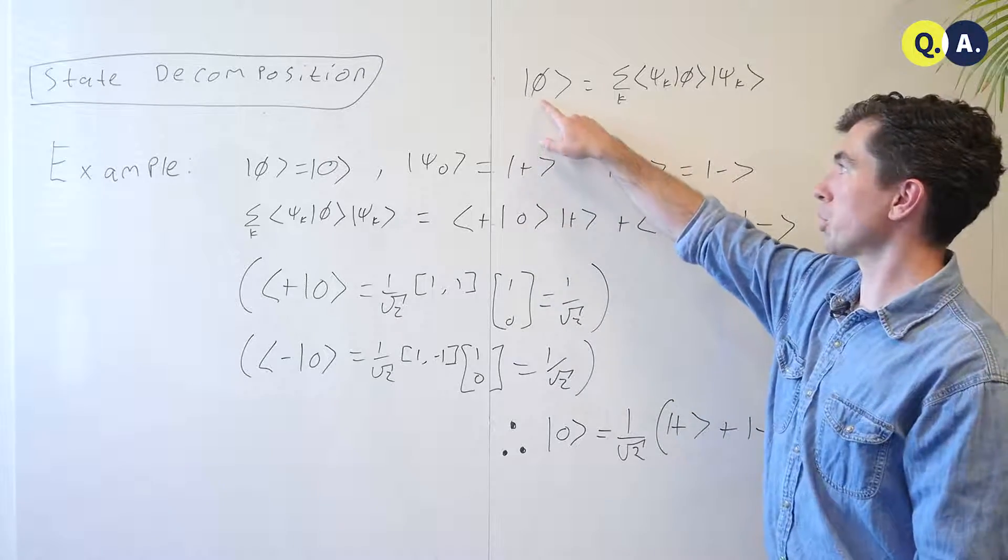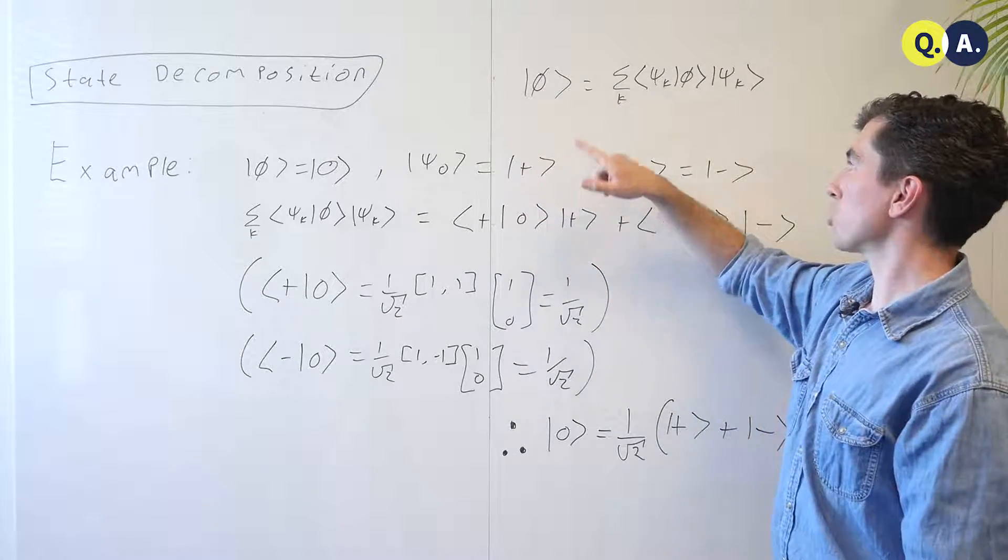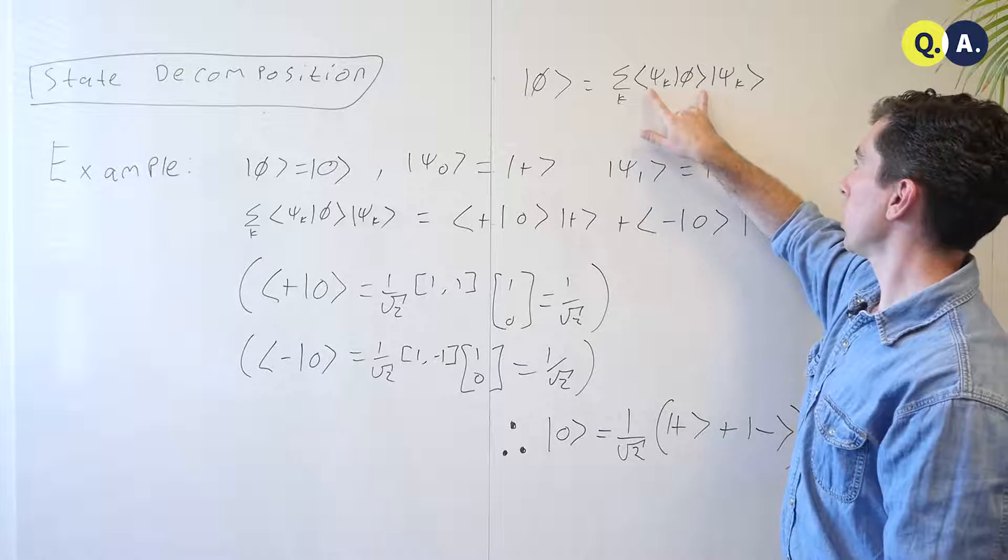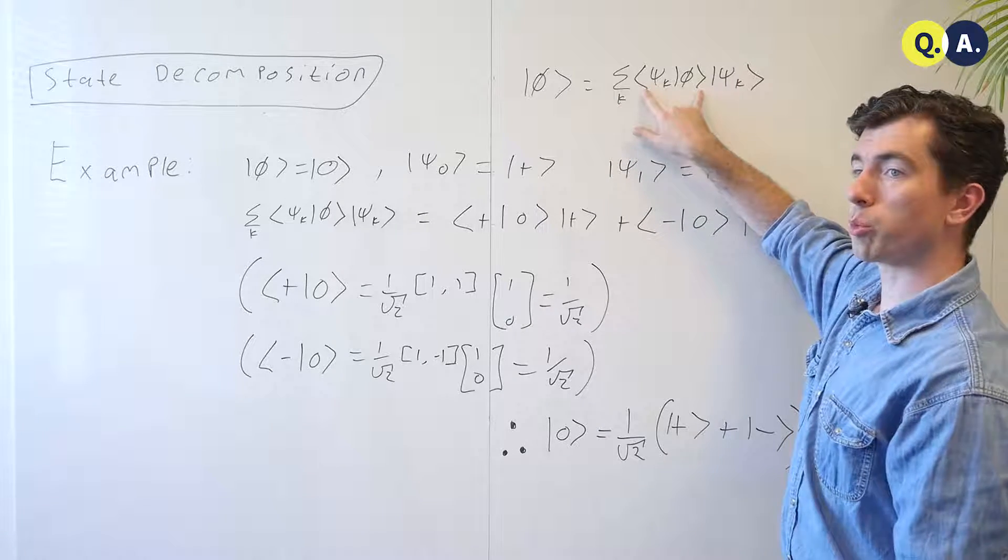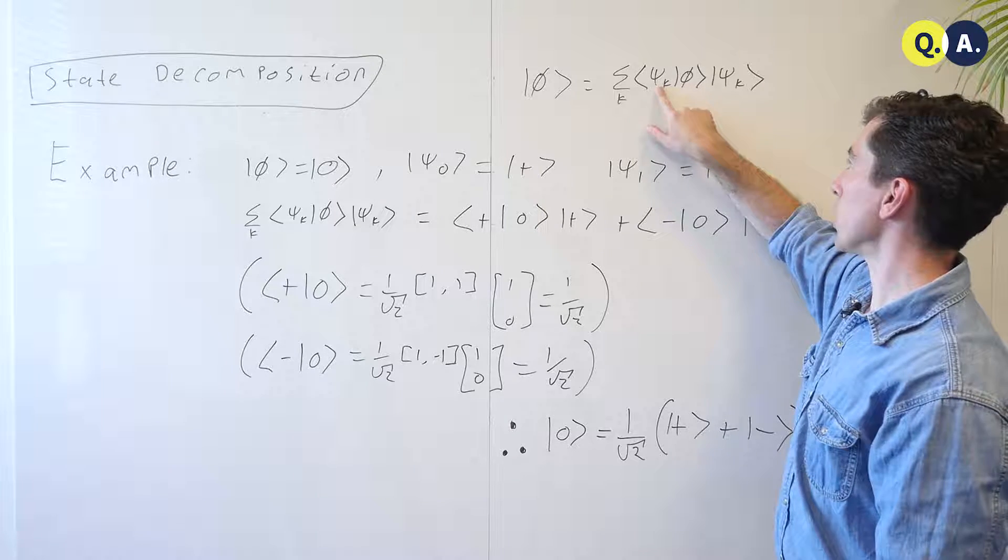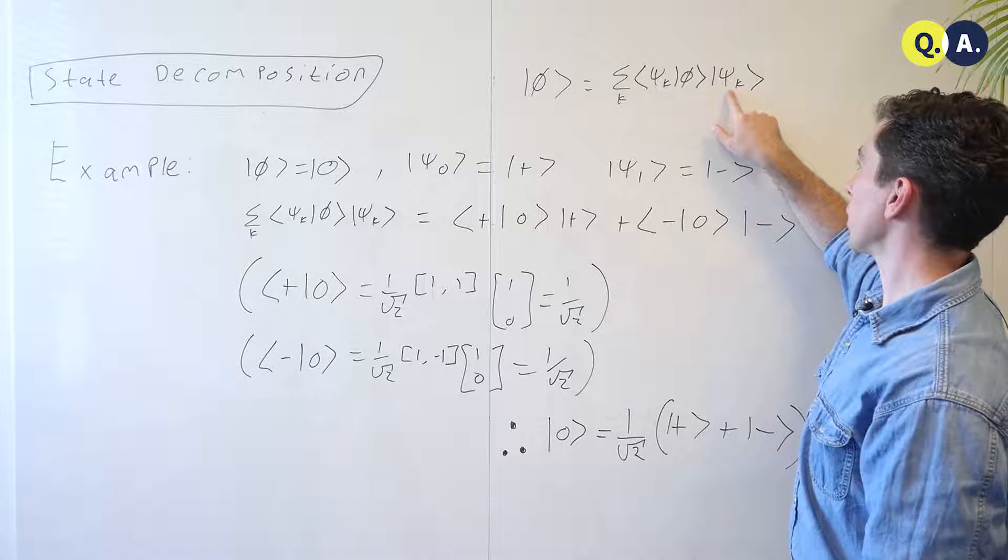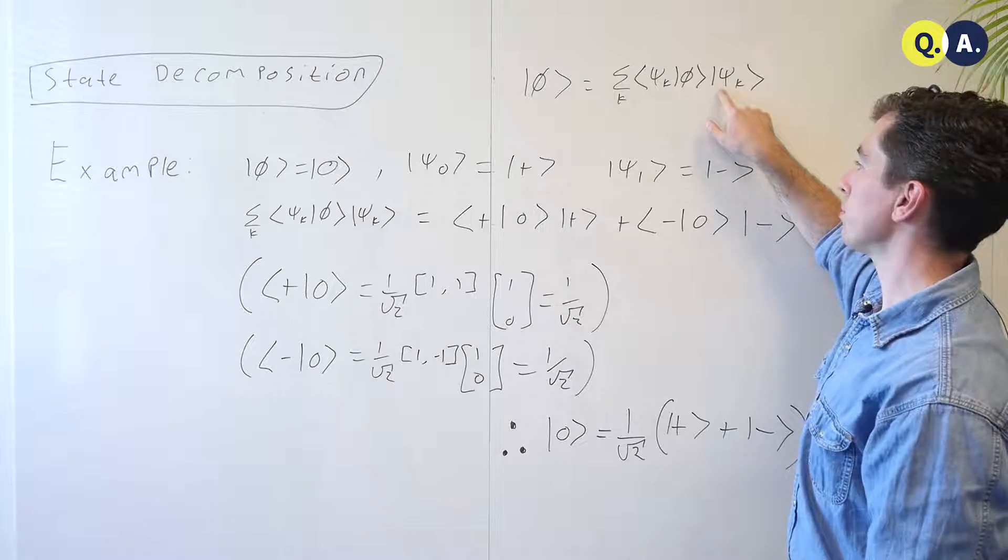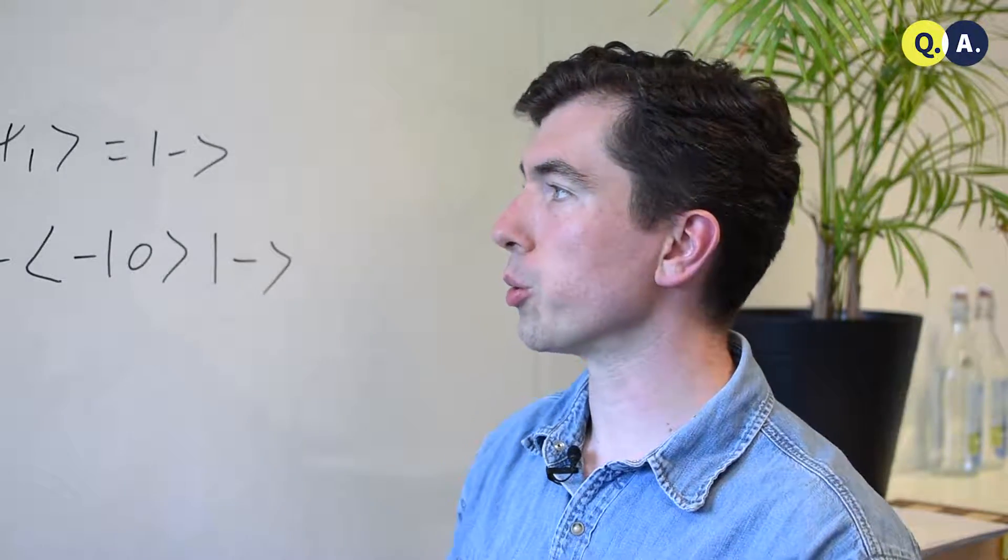The rule for state decomposition is that any state φ can be expressed as a sum over k terms, where each term consists of an inner product of φ, the trial state, with one of the basis states ψk and the state ψk - number times vector. This is the same thing as decomposing a vector in a basis if you're already familiar with linear algebra.